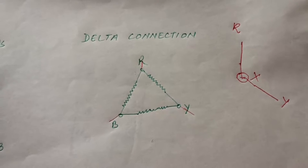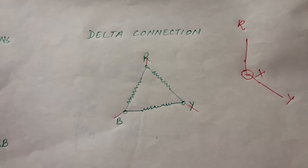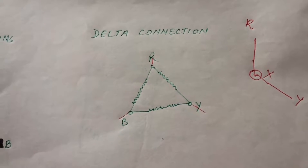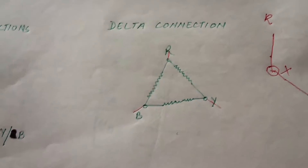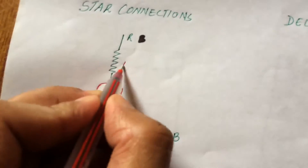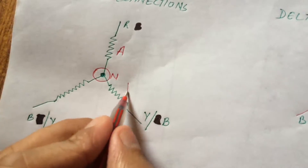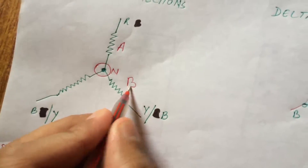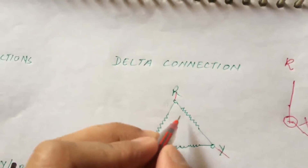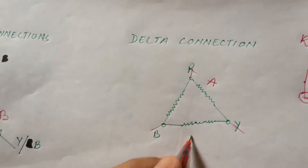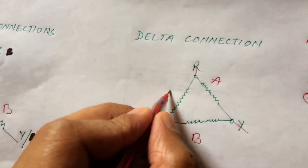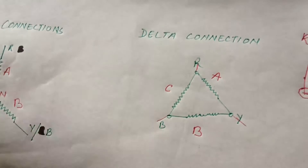In our case, the load is the winding of the stator, represented by A, B, and C. Similarly, here A, B, and C.